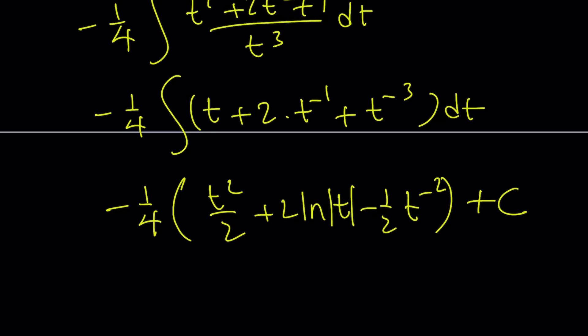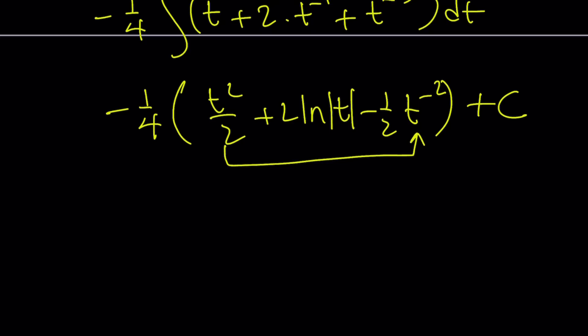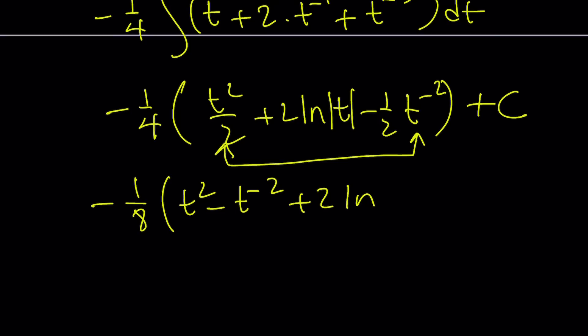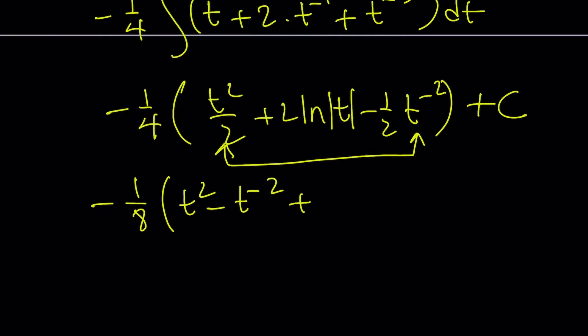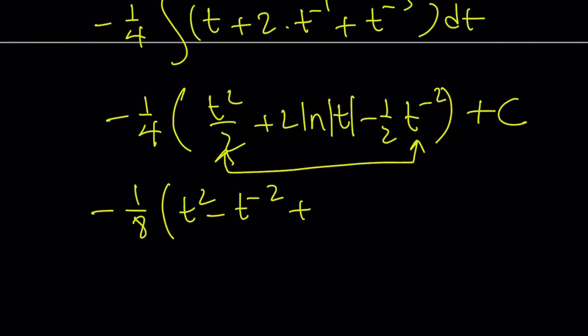One thing to keep in mind is these terms are related. I can factor out 1/2, which makes the coefficient -1/8 on t² and t⁻², and gives 4 ln|t|. So combining everything, we have -1/8 · (t² - t⁻²) + 4 ln|t|, multiplied by the -1/4 factor from before. At the end it's all going to even out.